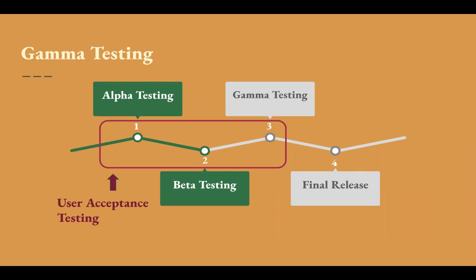Gamma testing is performed after beta testing. In some projects, gamma testing is skipped and they release the product for public use after beta testing without performing gamma testing. But being a tester or QA engineer, you should have knowledge about it. So gamma testing is the final stage of user acceptance testing.